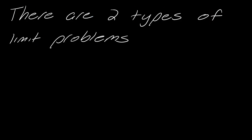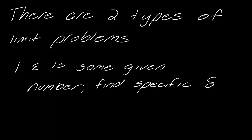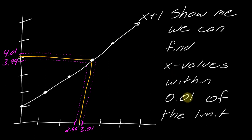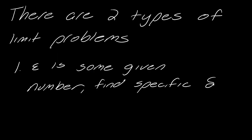There are really two types of limit problems, at least in my class. The first type is where epsilon is some given number and you have to find a specific delta. That's basically what we were doing at the beginning of this story — I was giving you an epsilon. When epsilon equals 0.5, we found the x values, and the delta was also 0.5. When epsilon equals 0.01, we found the x values and the delta in that case was equal to 0.01. That's the first type: finding that specific numerical delta.